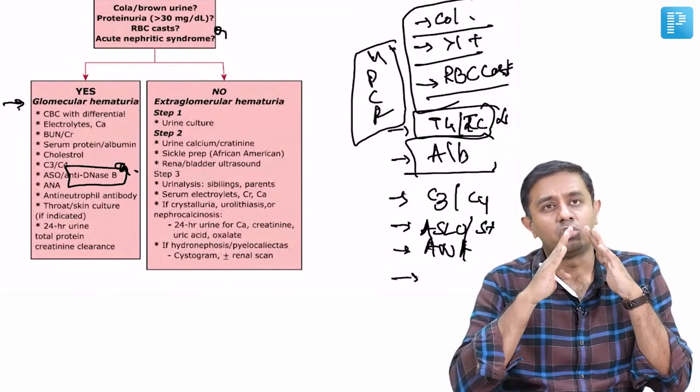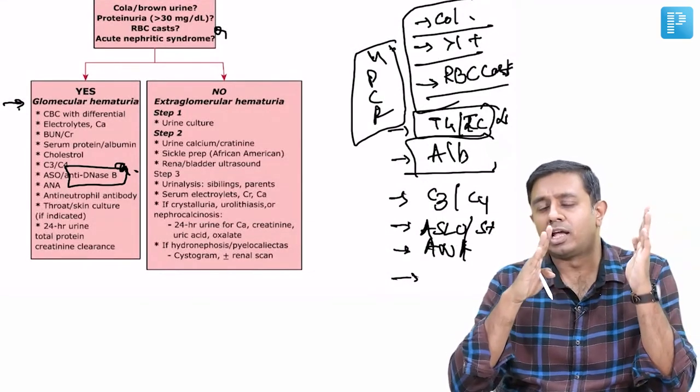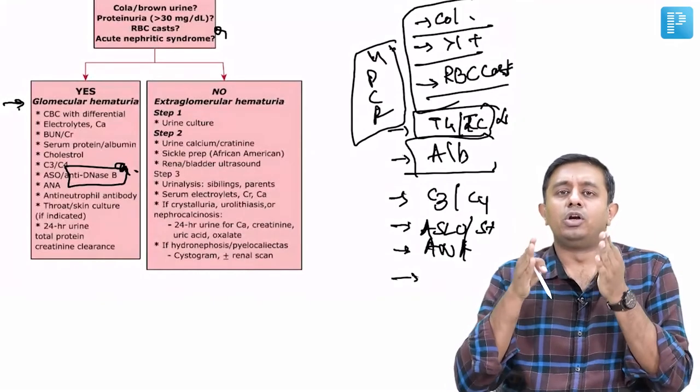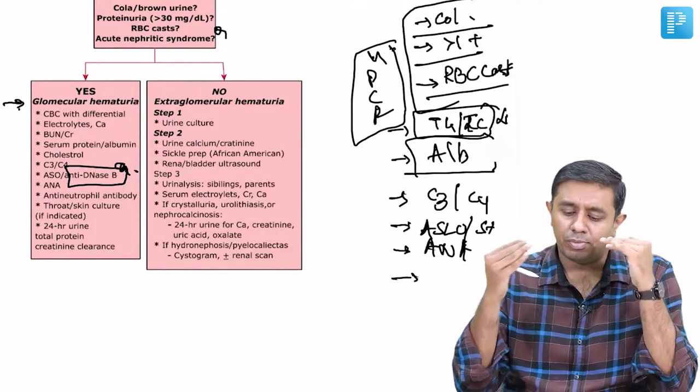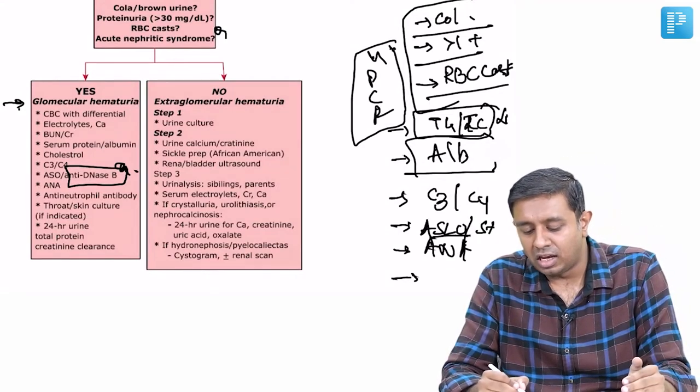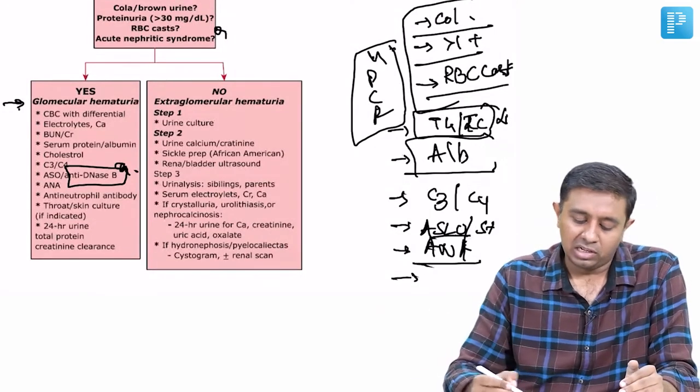If you are looking at nephritic type of presentation, definitely we should like to rule out PSGN by doing complement levels C3, C4, and a variety of other differentials that can be ruled out. Again, we'd like to do anti-streptozyme test, ASLO. ANA should always be in the panel, and last but not least, throat or skin culture if indicated.